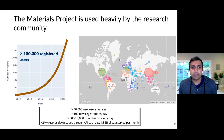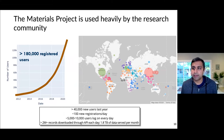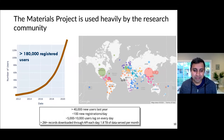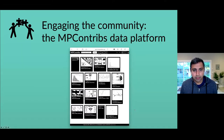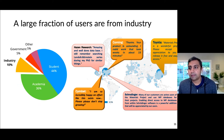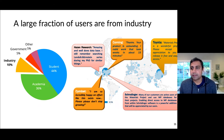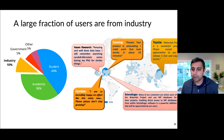The Materials Project is used heavily by the research community. At this point, we now have 180,000 registered users, and this seems to be increasing exponentially. About 10% of our users are industry users, about 36% are academia, and almost half are students. So this seems to be a resource that many different people can use, all the way from the student level to the industrial level, with lots of data being downloaded from all over the world.